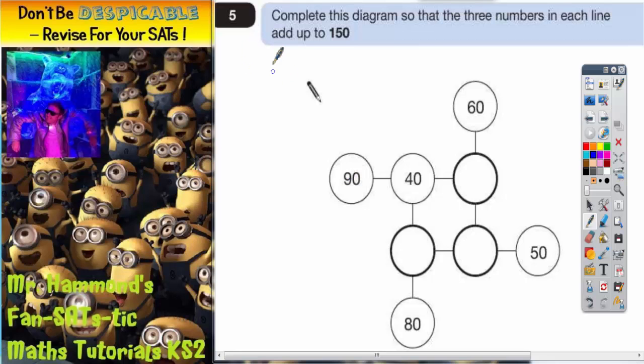Question 5 is a bit of a puzzle. It says complete this diagram so that the three numbers in each line add up to 150.